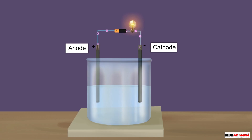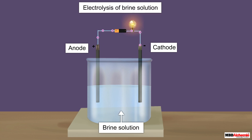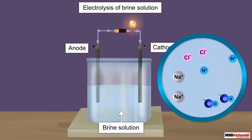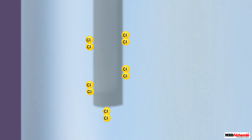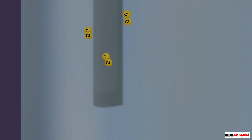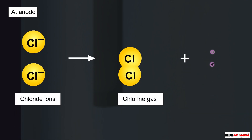Dihydrogen is also obtained as a byproduct during the electrolysis of brine solution. The brine solution contains sodium ions, chloride ions, hydroxide ions, and hydrogen ions. During electrolysis, the chloride ions move towards the anode and get oxidized to form chlorine molecules. Therefore chlorine gas is released at the anode, as represented by the chemical equation shown here.